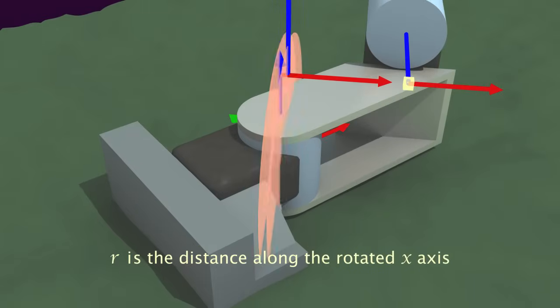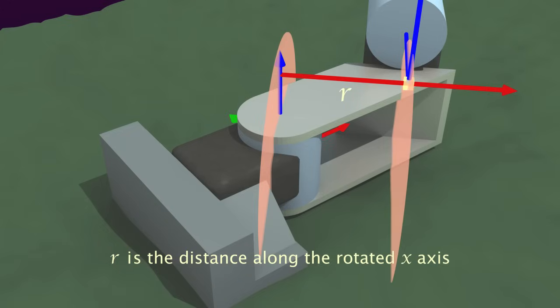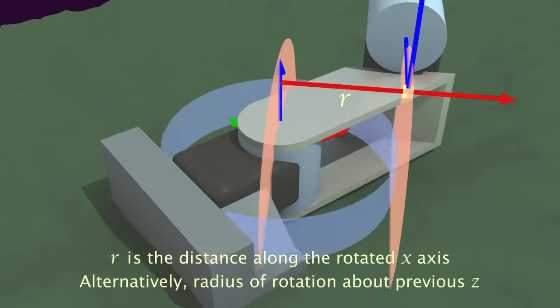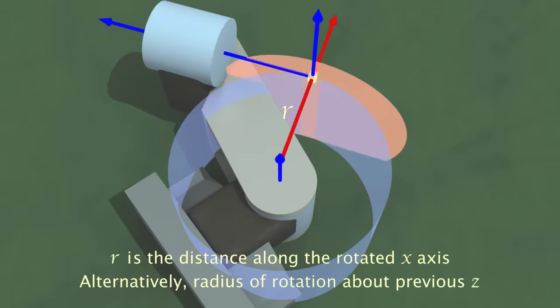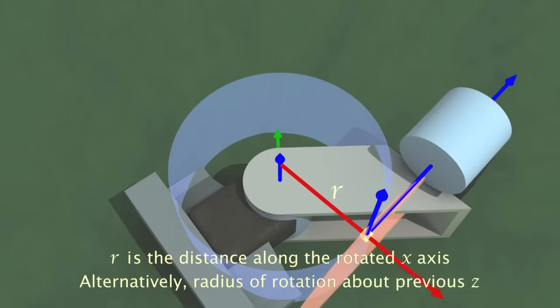R is the length of the common normal itself. Most texts call this parameter a, which is unfortunately easy to confuse with alpha. Instead, calling it r is a useful mnemonic, as this is also the radius of revolution for the new origin about the previous z.